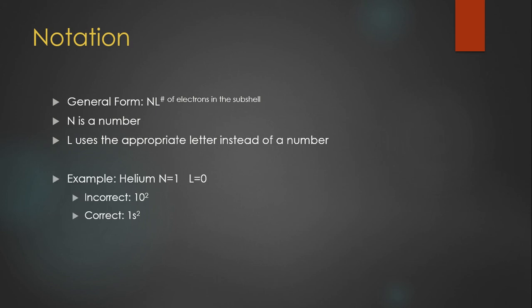For example, for helium, it's going to be n equals one, and then L equals zero. In the incorrect notation, it's going to look like 10 squared, which when I read it, I see 100 there. That doesn't tell me anything about the electrons in the element helium.